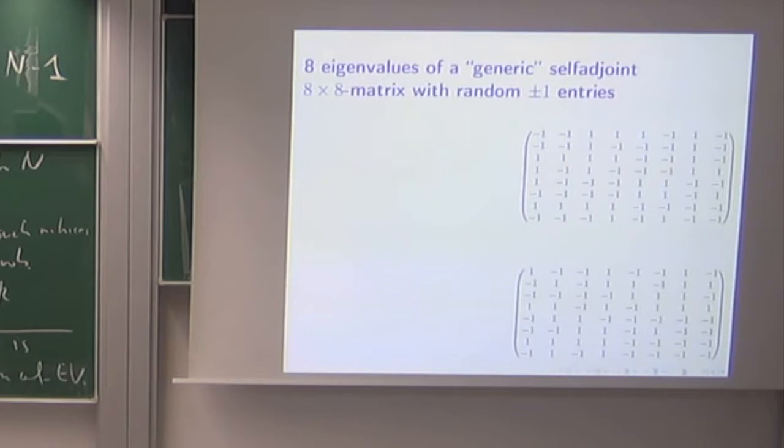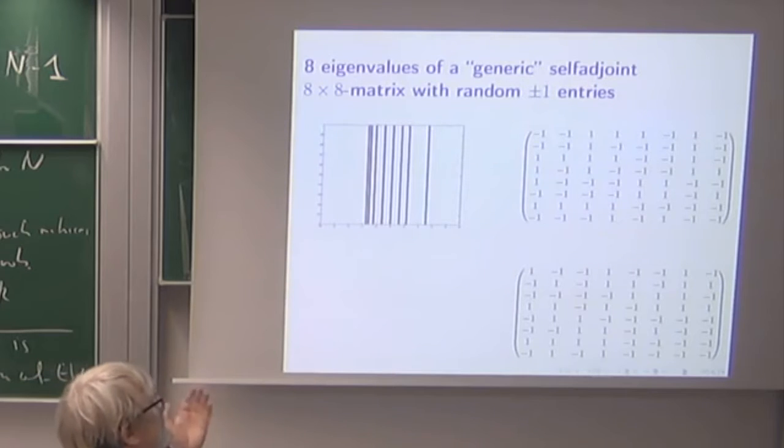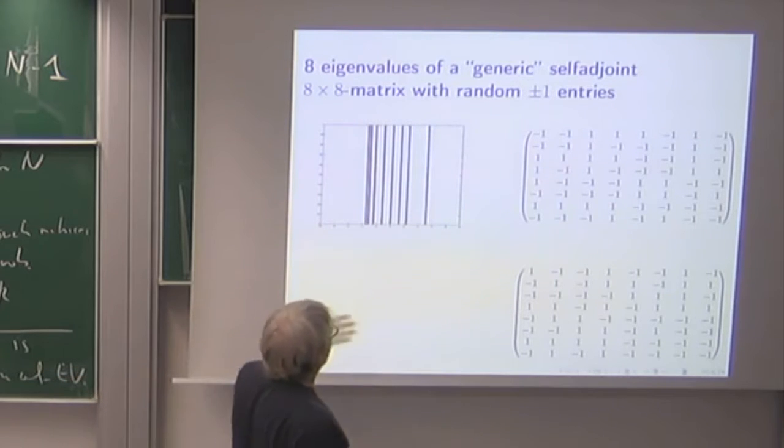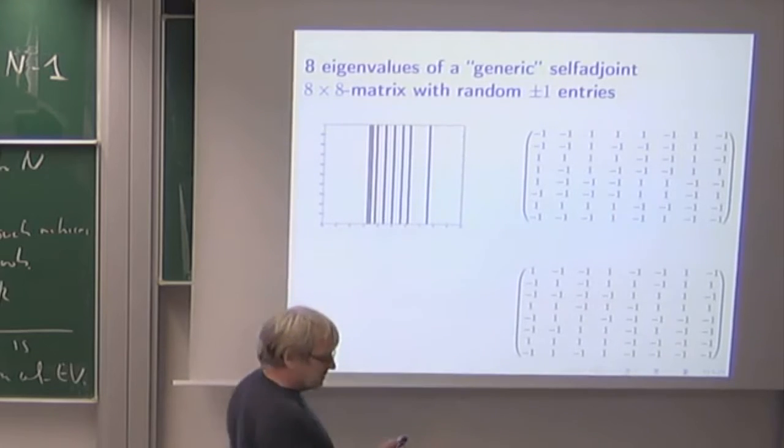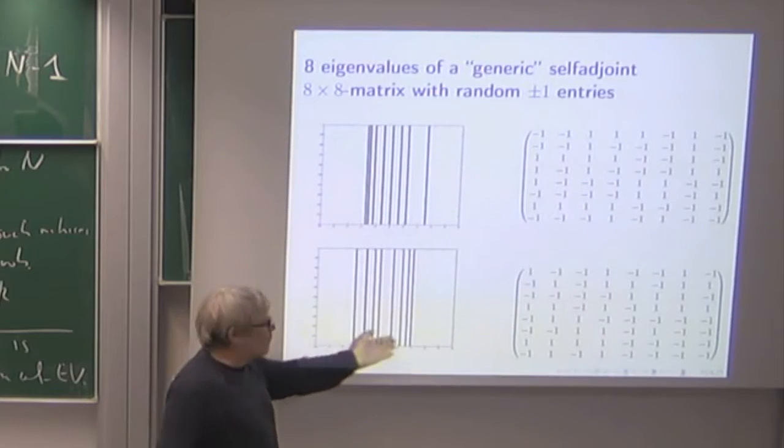But again here with this eight, of course there will now be eight eigenvalues which are sitting somewhere. So those are the eight eigenvalues, one here, one here, one here and so on of this matrix.